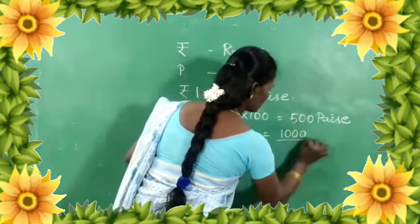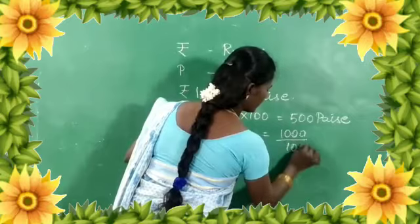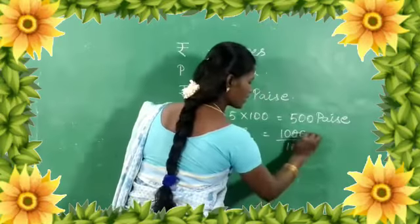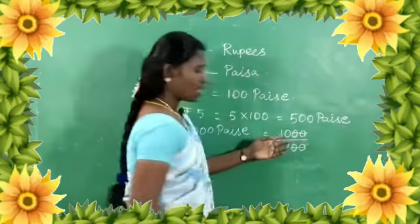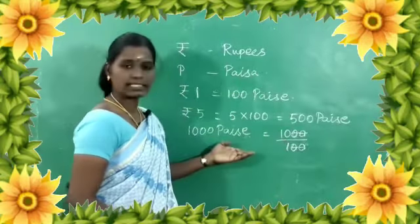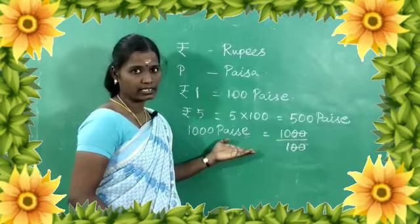1000 divided by 100 equals 10. So 1000 Paisa is 10 Rupees.